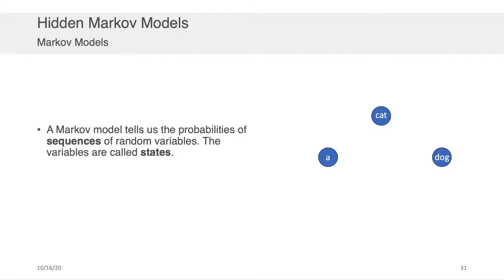A Markov model tells us the probabilities of sequences of random variables, and these variables are called states. In the context of NLP, the states are the individual tokens, bigrams, trigrams, what have you, that make up the vocabulary in your text.